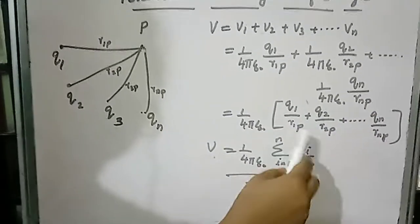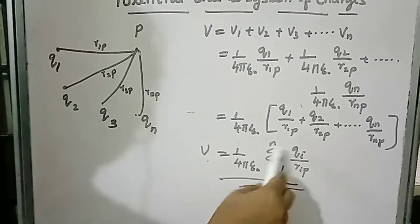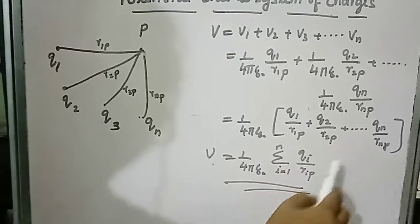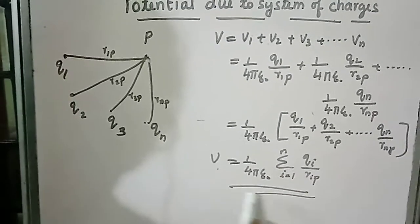In summation formula, 1 by 4 pi epsilon 0, sigma i equals 1 to n, Qi divided by RiP, and potential due to system of charges.